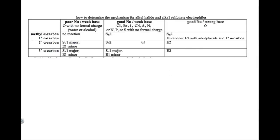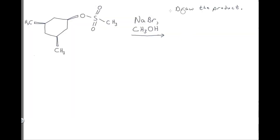Let's look again at the table we've used so many times. Notice that this table applies to alkyl halide and alkyl sulfonate electrophiles. In previous videos we've been applying this to alkyl halide electrophiles, and now we can see that this same table applies to alkyl sulfonates. We've already seen many examples applying this table to alkyl halides; now let's look at a few examples applying it to reactions involving alkyl sulfonates.